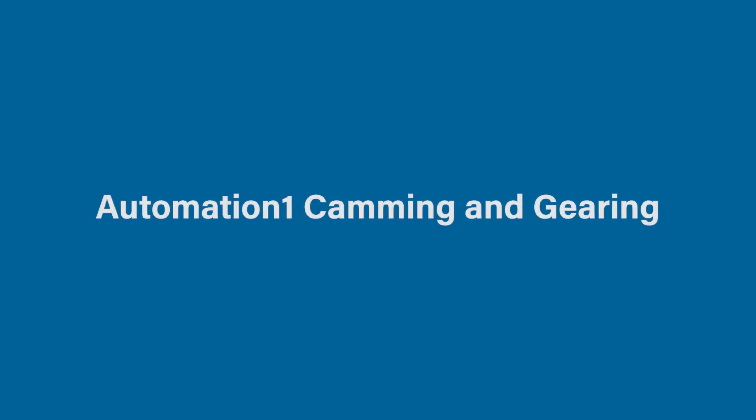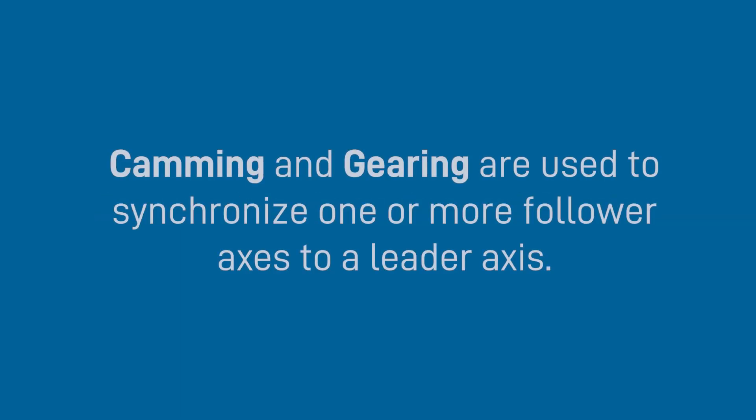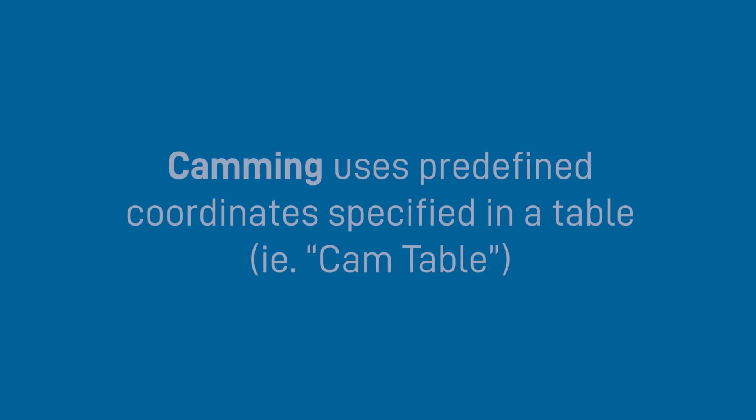Let's jump in and look at what the camming and gearing functions are. On their surface, these features are simply used to synchronize one or more follower axes to a leader axis. So as your leader axis moves, your follower axis will follow. First is camming. Camming is a method that utilizes a predefined set of coordinates specified in what we refer to as a cam table.